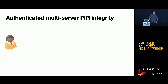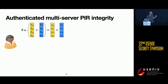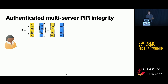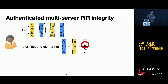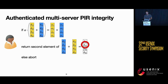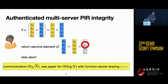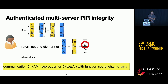The check Alice performs is: she verifies that alpha times the sum of the first answers equals the sum of the second answers. If that holds, she returns the record of interest; otherwise she aborts. With this check, Alice can authenticate the record d22 she's interested in. This protocol has square-root-in-database-size communication complexity. In the paper, we also propose a more efficient protocol with O(log n) communication complexity based on function secret sharing.